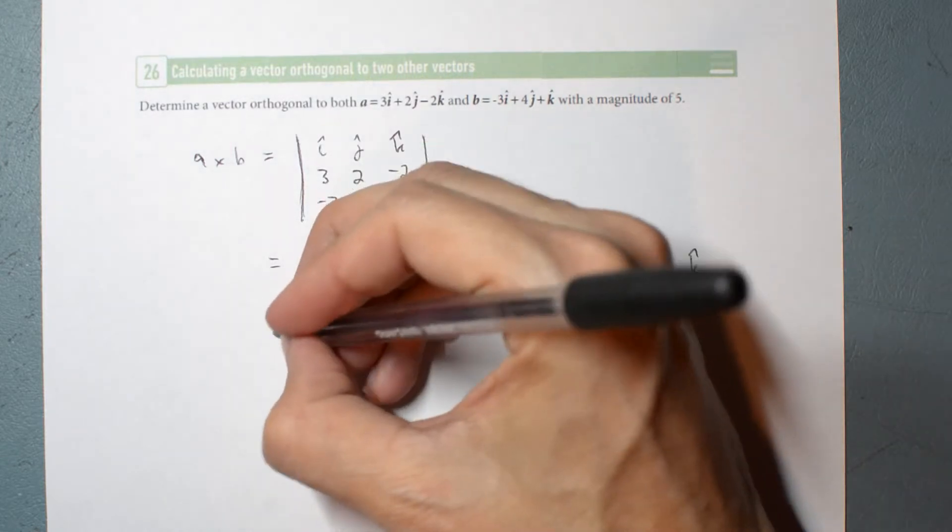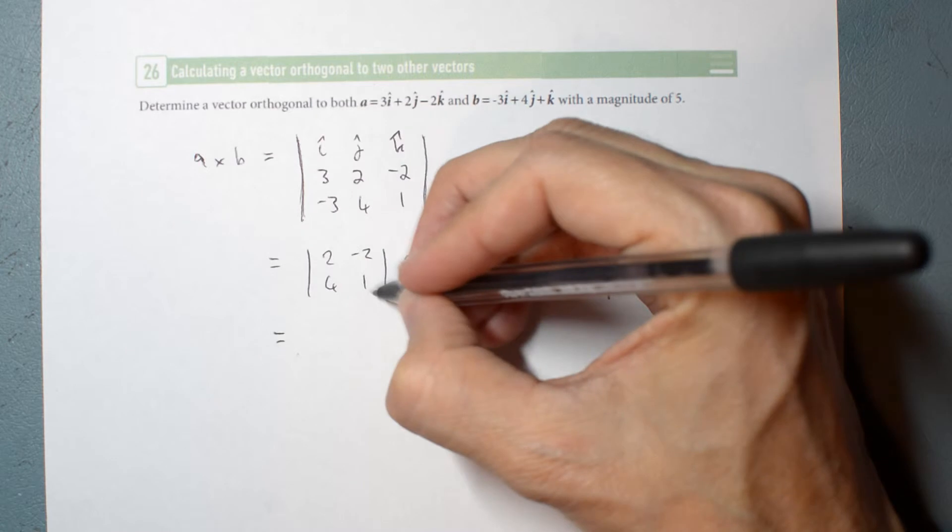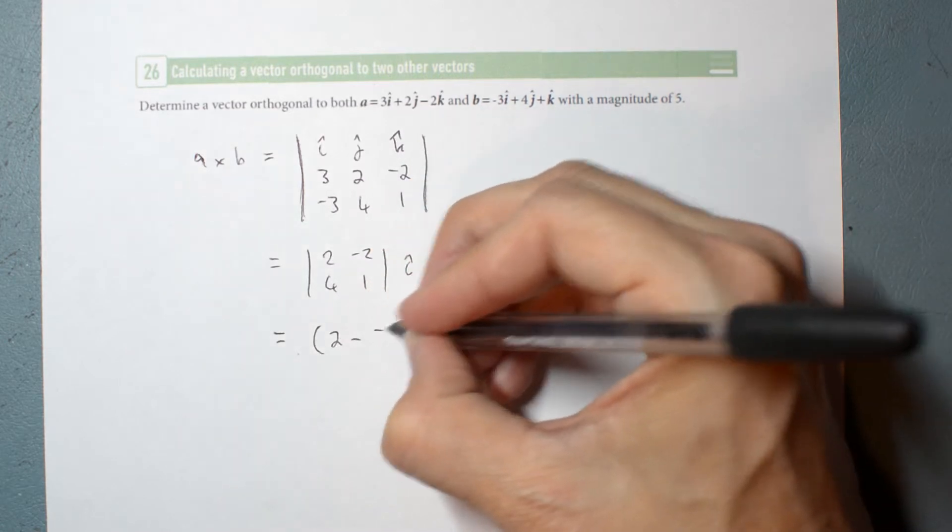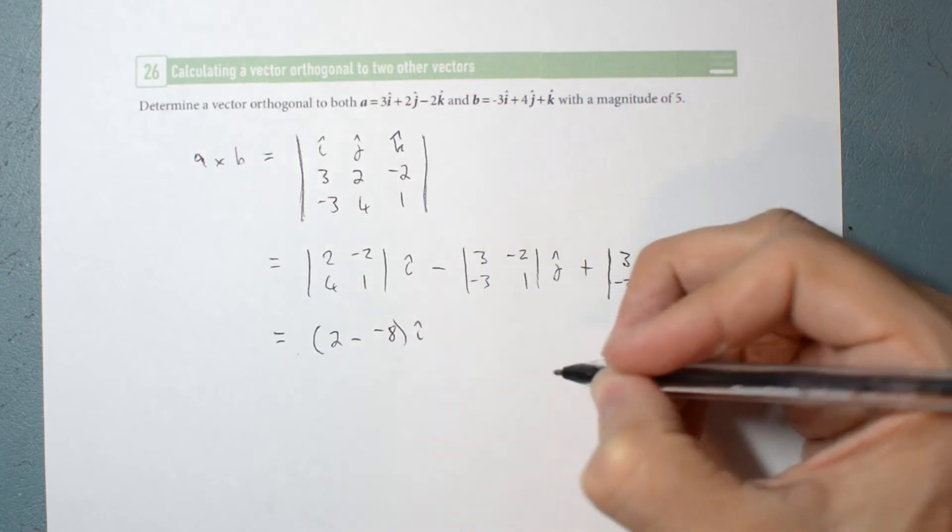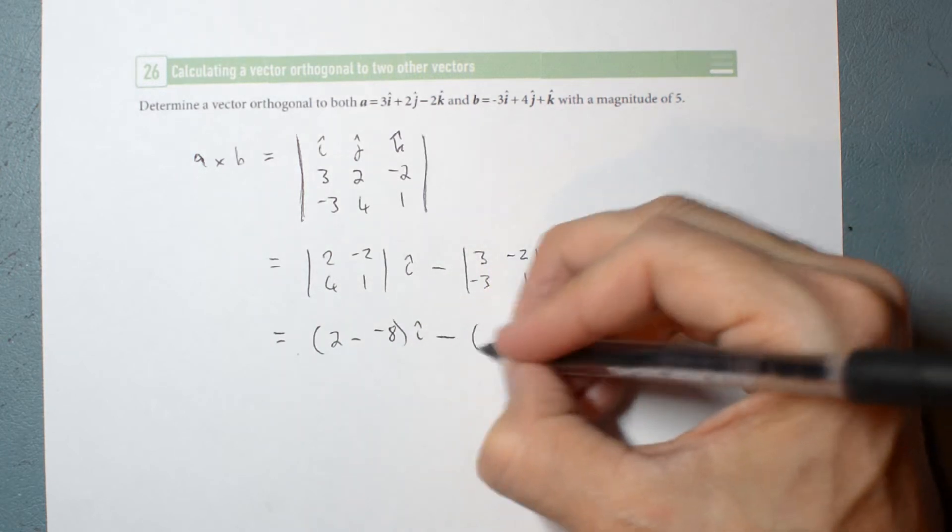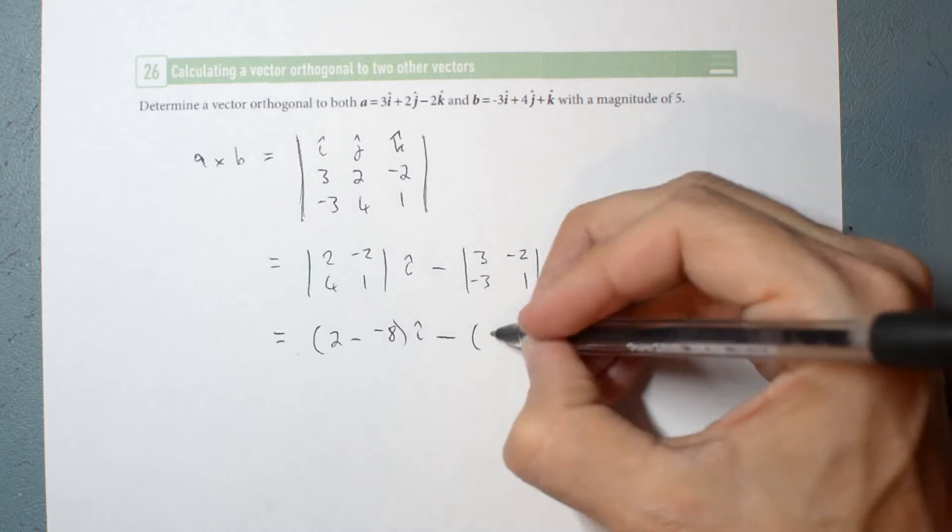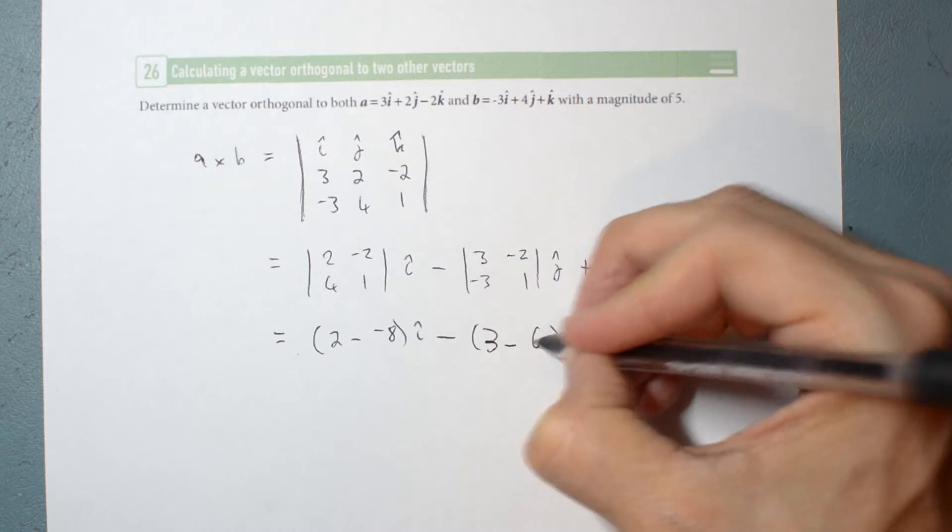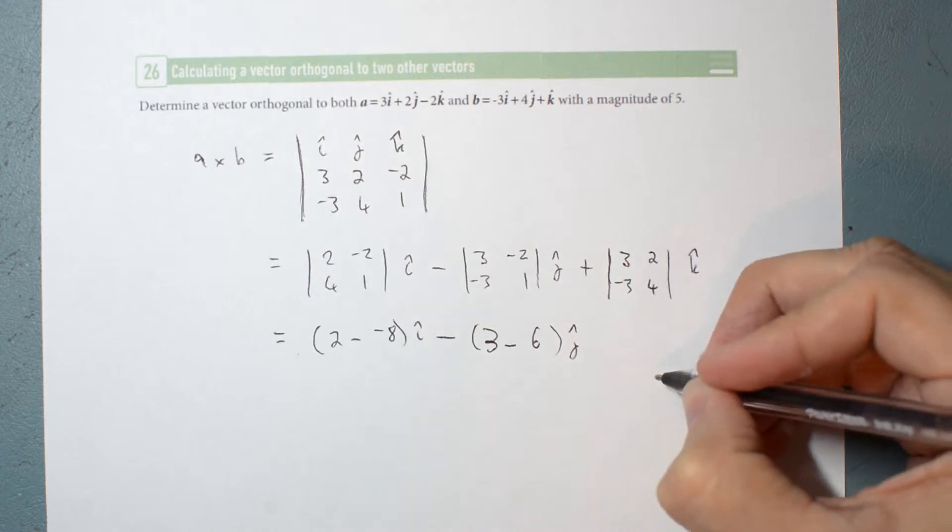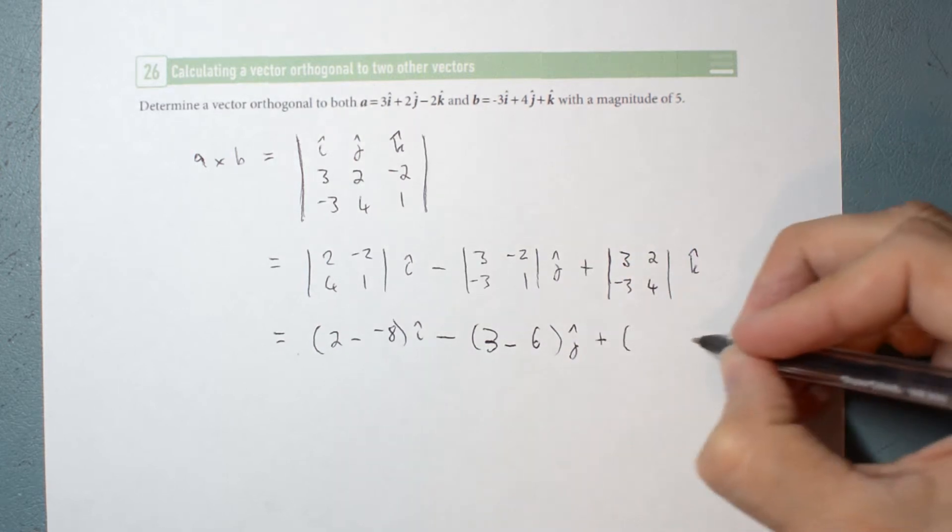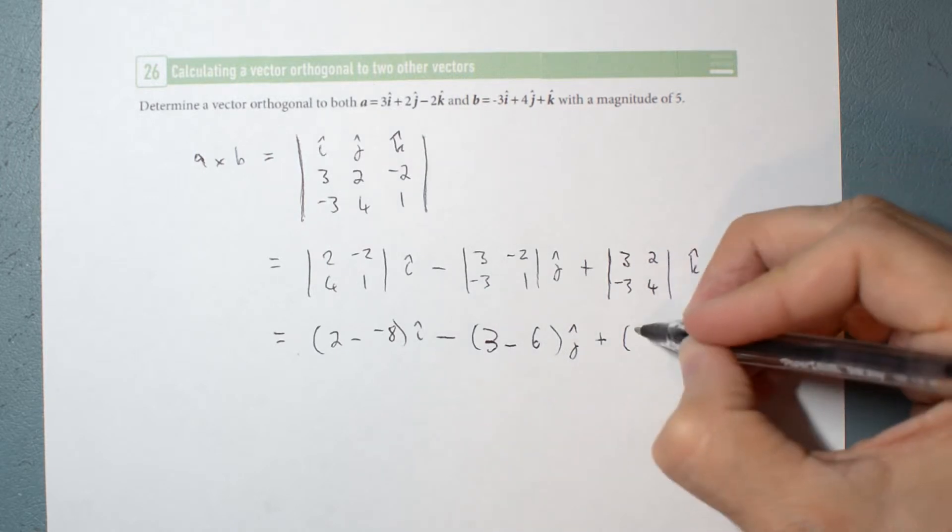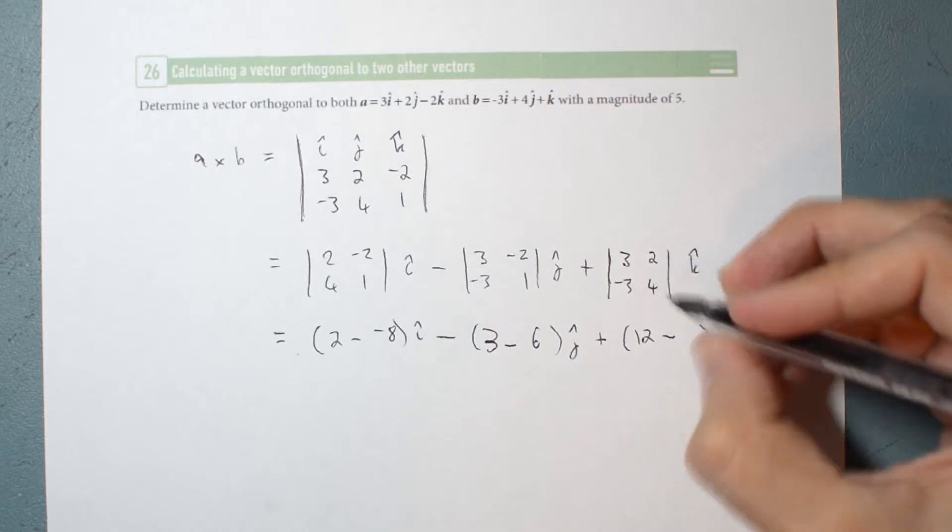And then each of those multiply this diagonal and multiply that diagonal. So, 2 minus negative 8 I hat, minus 3 minus 6 J hat, plus 12 minus negative 6 K hat.